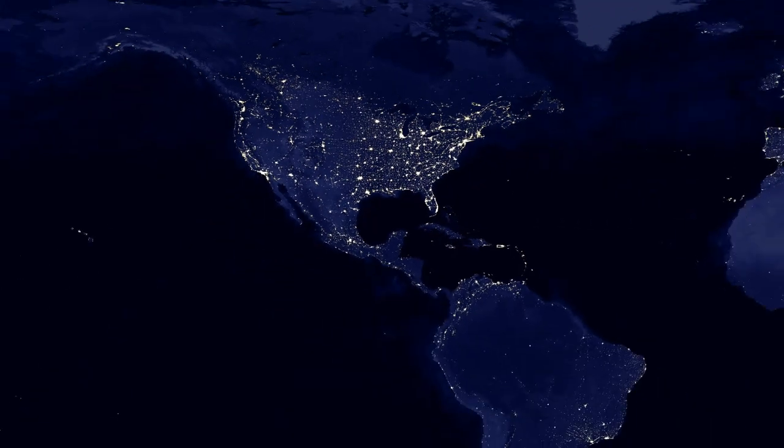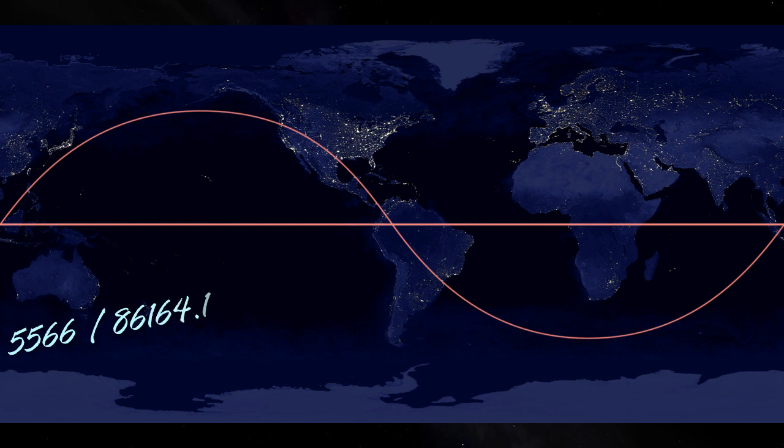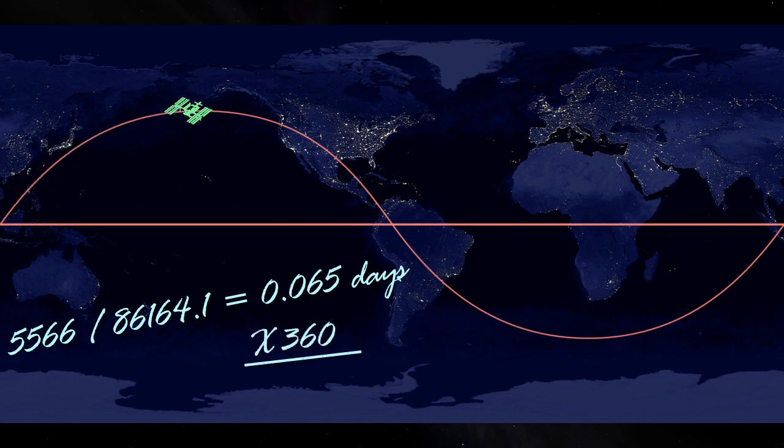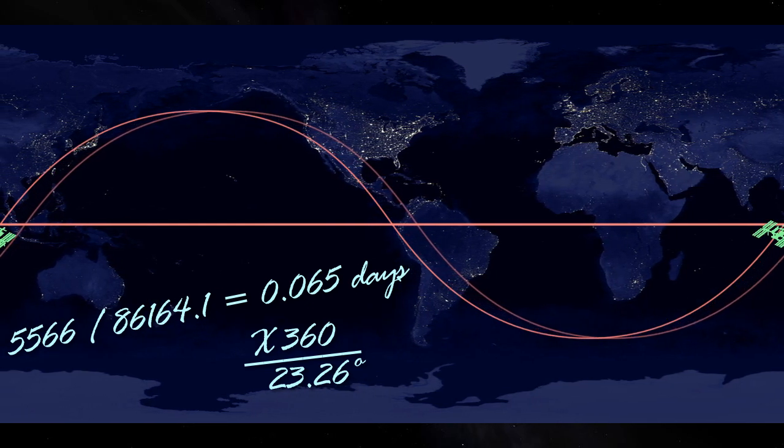Unfortunately for them, this doesn't happen. Divide the orbital period by the length of the sidereal day, and we find that the ISS completes its orbit in 0.065 days. In this time, the Earth will have rotated 23.26 degrees underneath it. Sadly for geocentrist observers, the reality is that they will have to wait longer than an hour and a half before the ISS tracks the same path across the sky again.